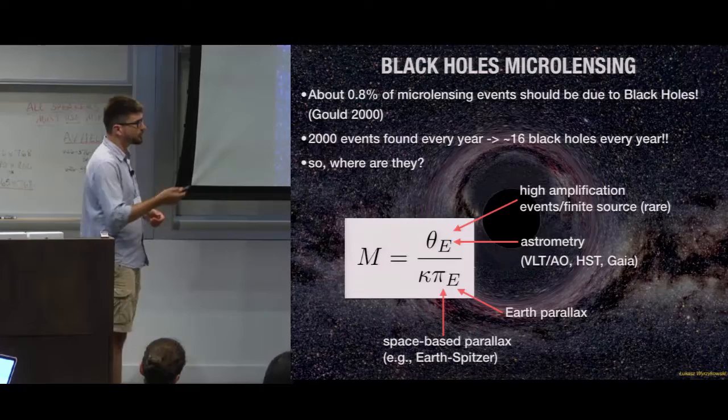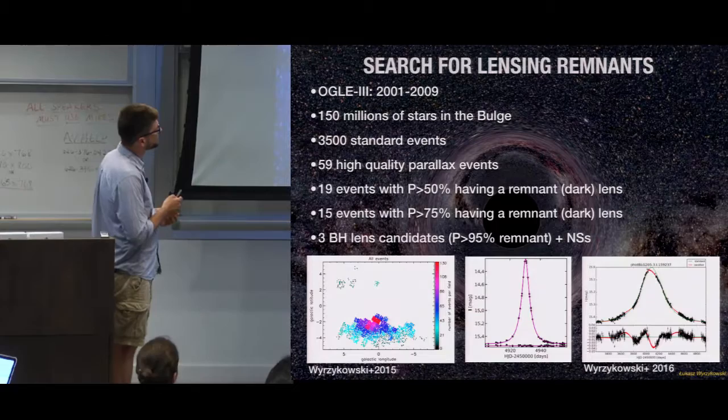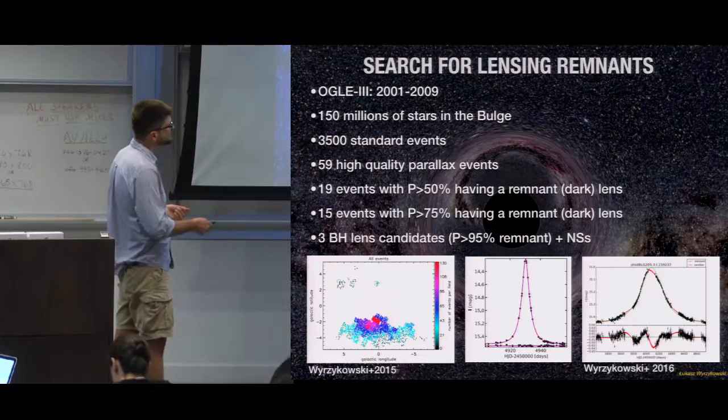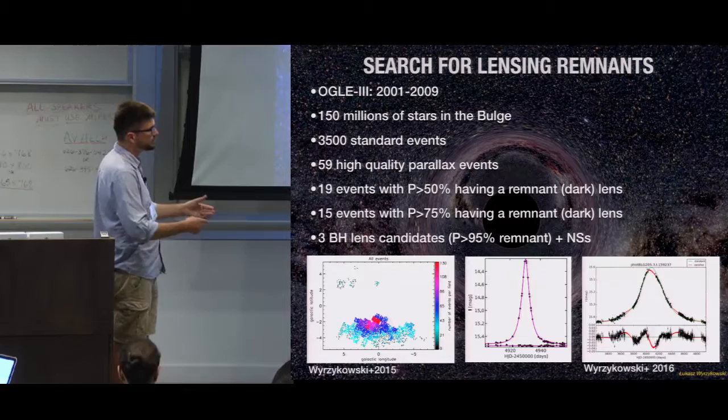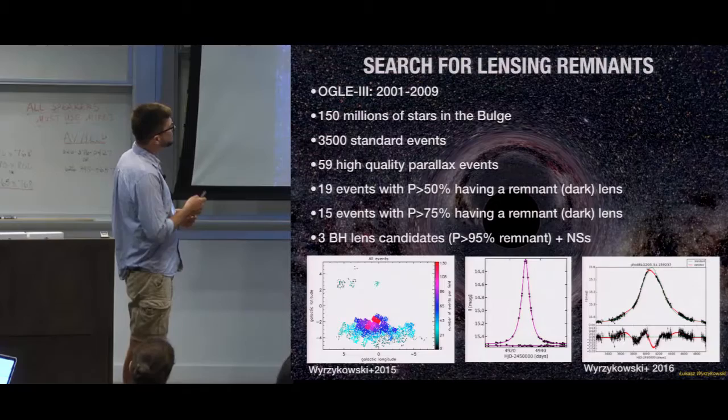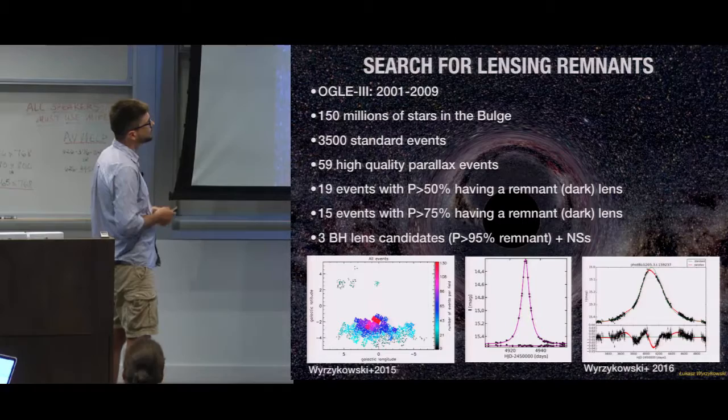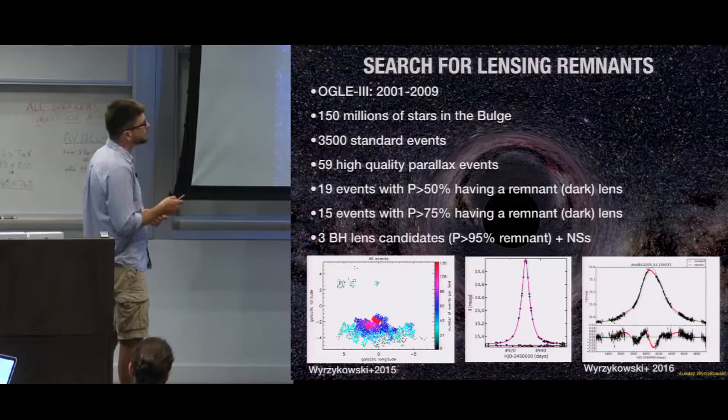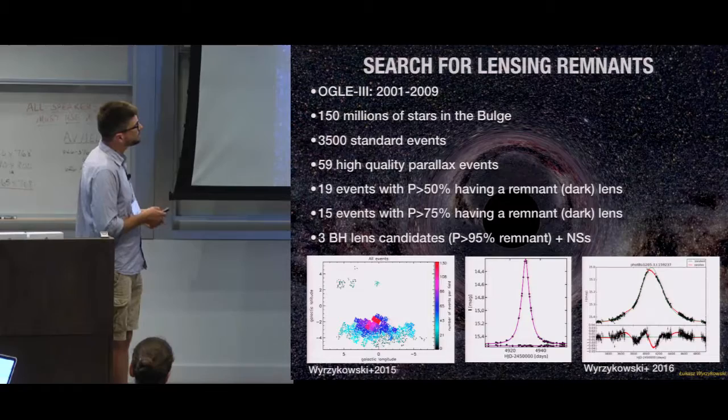So this is the reason. You've seen this equation already. In order to get a mass of the lens, you need to measure both parallax and the size of the Einstein radius. You can measure pi E with annual earth parallax, but also using space-based parallax. That's a fairly new channel. For theta E, it's more complicated because then you need high amplification events in order to detect finite source effect, but this is rare. Or you can use astrometry, as already shown before, with some adaptive optics observations or HST or also Gaia, but I will talk about it in my other talk on Thursday. So we did the search within OGLE data as well, OGLE 3 data in particular, which covered eight years. There were 150 millions of stars in the bulge, and we found 3,500 standard microlensing events.